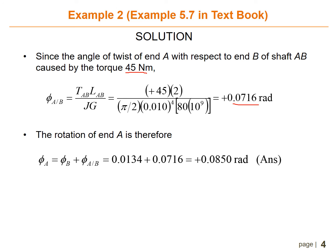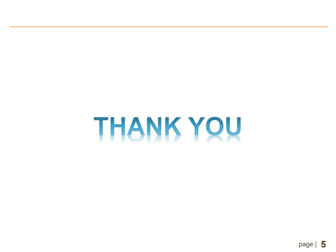The rotation of end A is therefore theta A equals theta B plus theta A/B, which equals 0.0134 plus 0.0716, equals 0.085 radians. This is the answer for this equation. That's all, thank you so much.